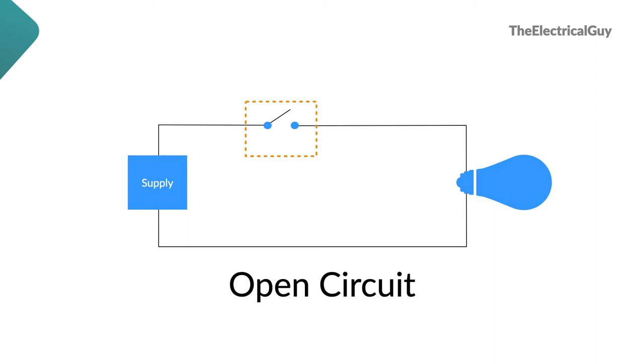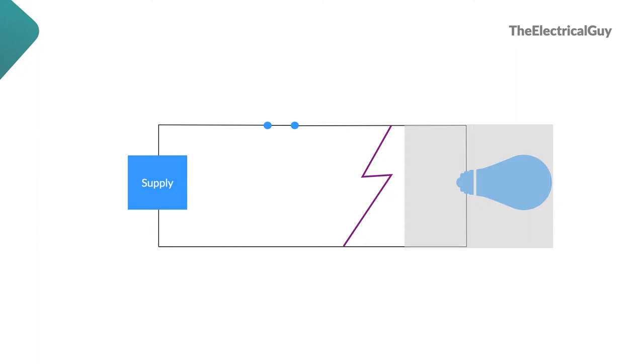Now let's go back to the closed circuit situation. Let's say because of some reason an unwanted path created in the circuit. This path offers a very low resistance for circuit, and hence, majority of current flows through this path only. This situation is called as short circuit.